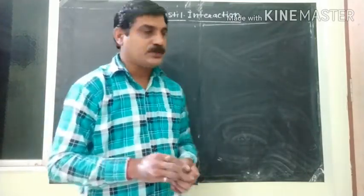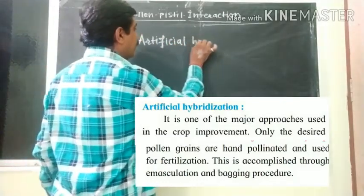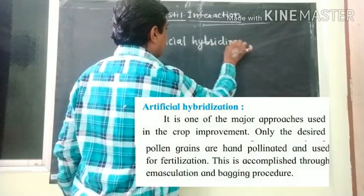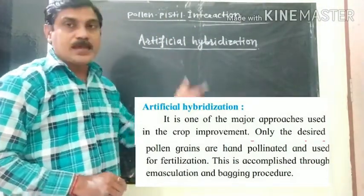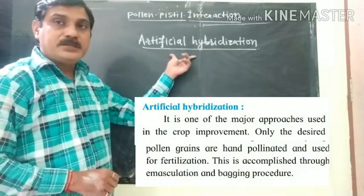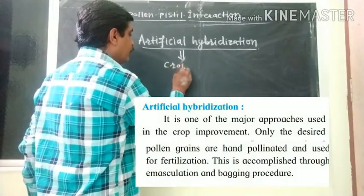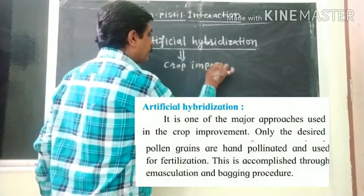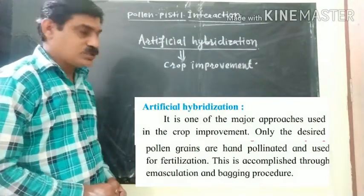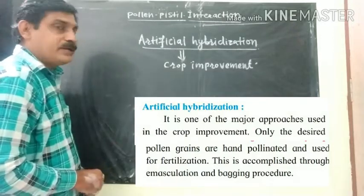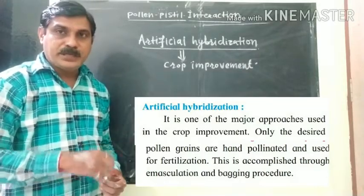Next we have to discuss about artificial hybridization. Artificial hybridization is the major approach used in crop improvement.